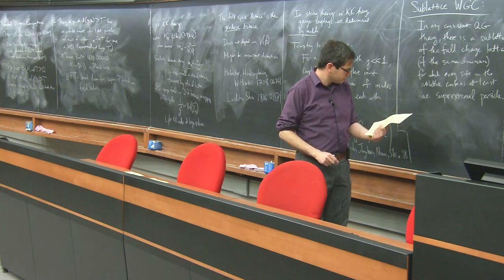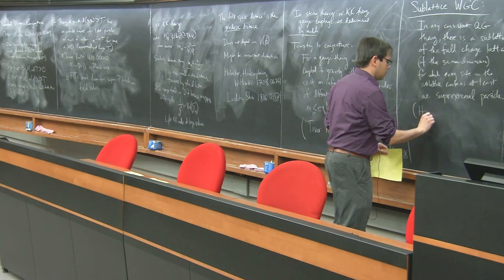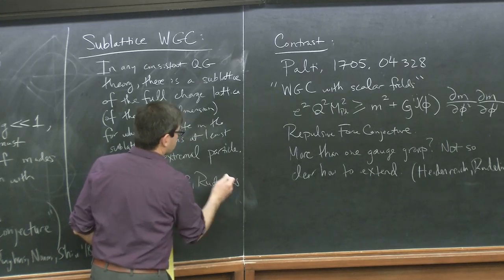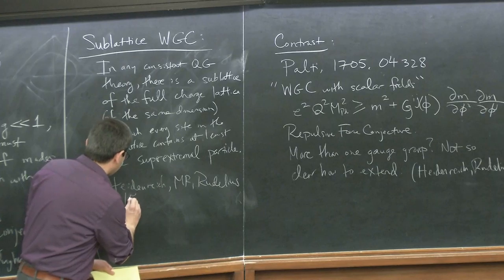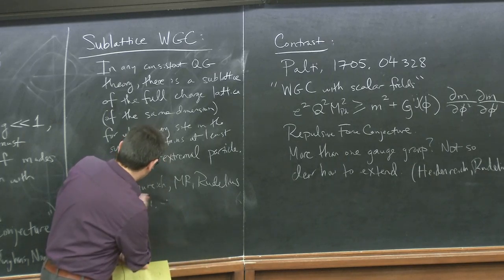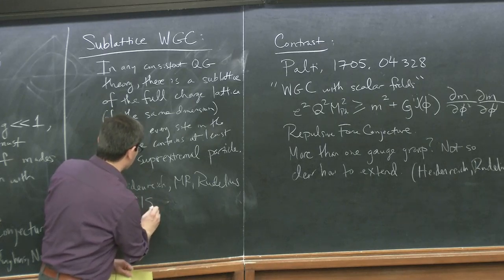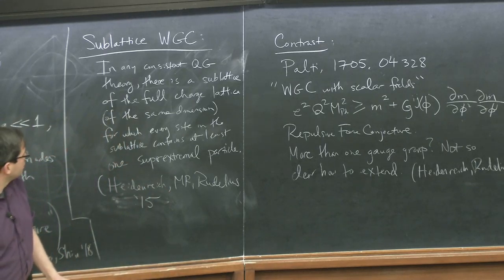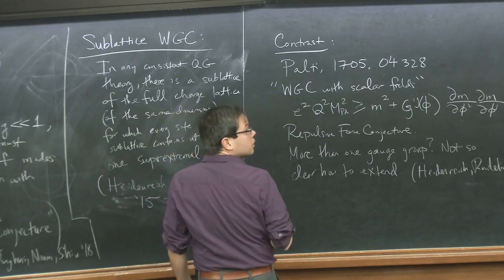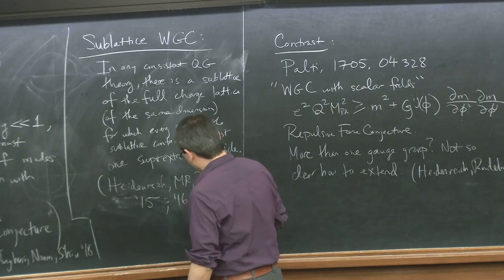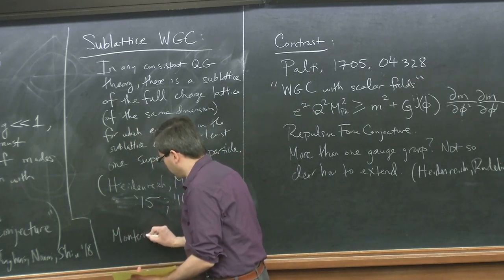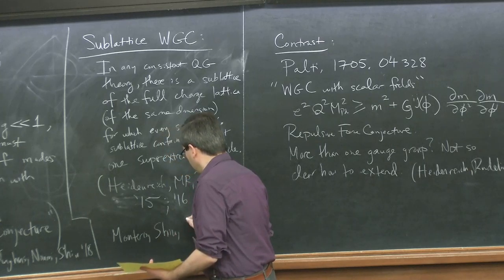This conjecture was formulated by Ben Heidenreich, Tom Rudelius, and myself. We first wrote a paper in 2015 where we guessed that this was true for the full charge lattice — we didn't have the sublattice part. It turned out there was a counter-example, so we refined this to the sublattice statement in a paper in 2016. There was a simultaneous paper by Miguel Montero, Gary Shiu, and Pablo Soler with the same formulation.